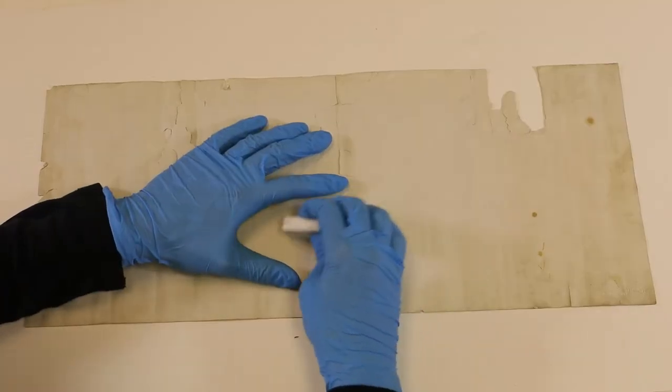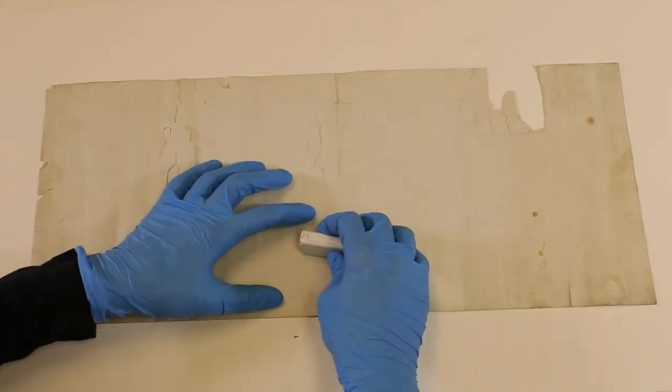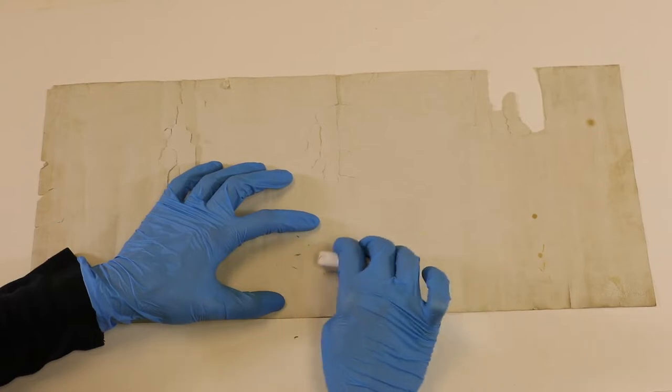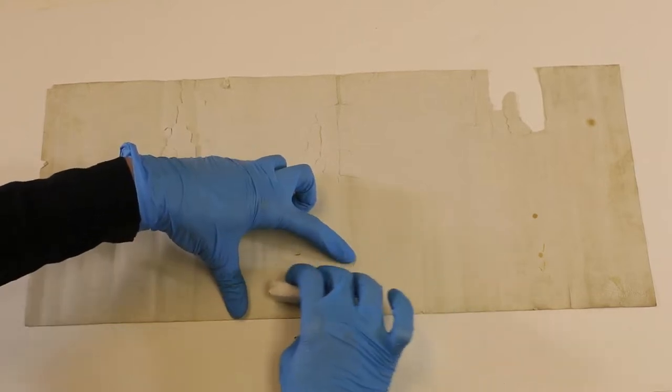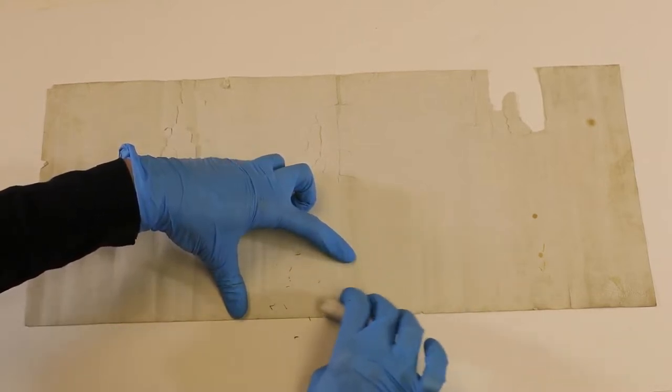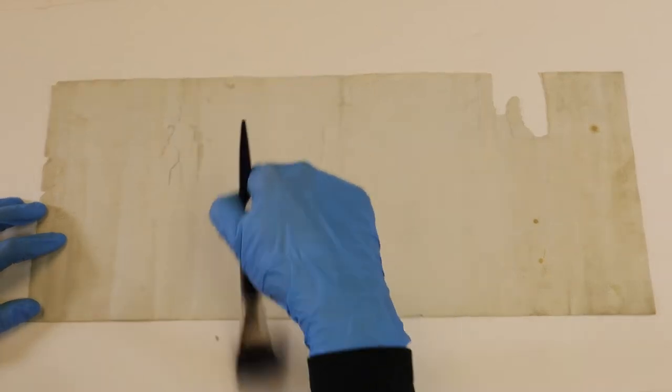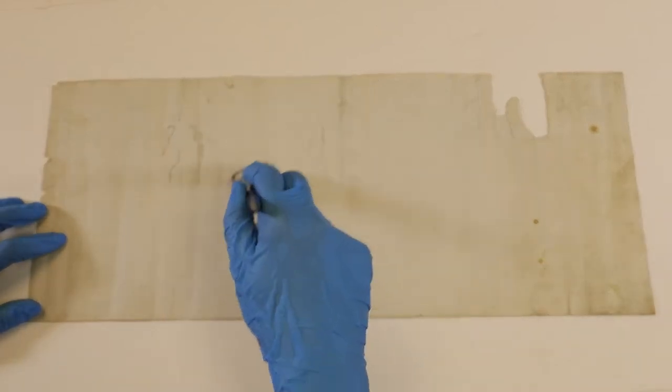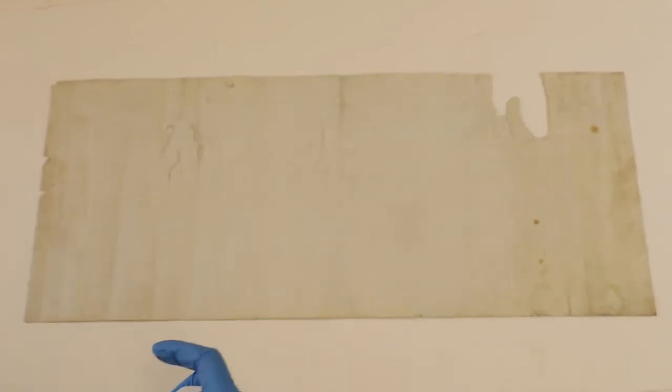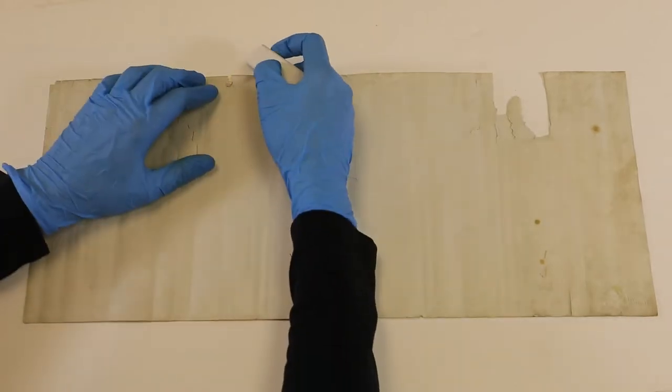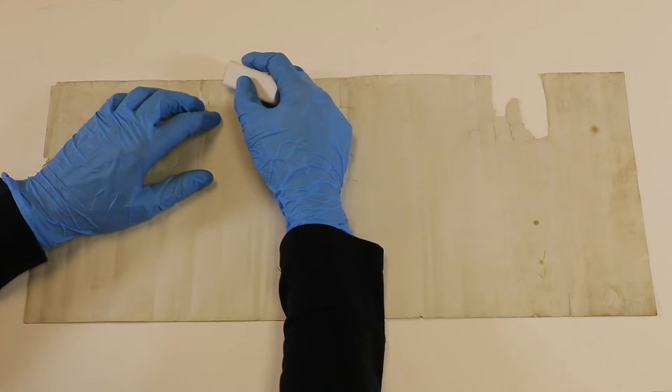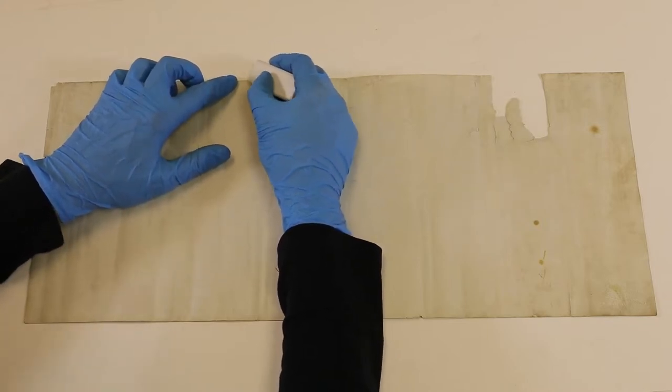The first thing we do is carefully clean the back of the photograph using what most people use to take smudges off of paper, a white vinyl eraser. You can also use those little white latex makeup sponges, or if you want to be very delicate, you can grate the vinyl eraser into little tiny crumbs and then rub them over the surface. This paper is in pretty good shape, so we're just going to give it a gentle massage.